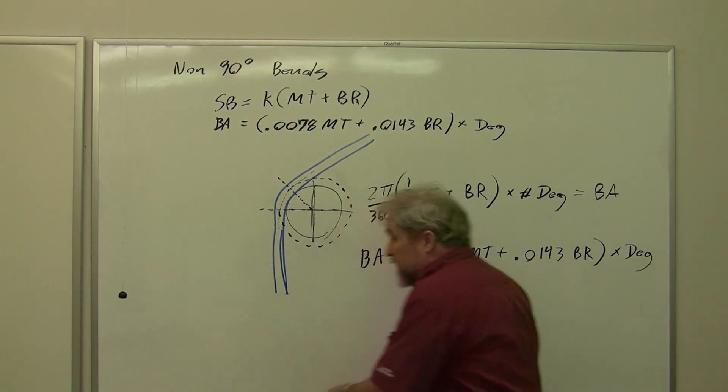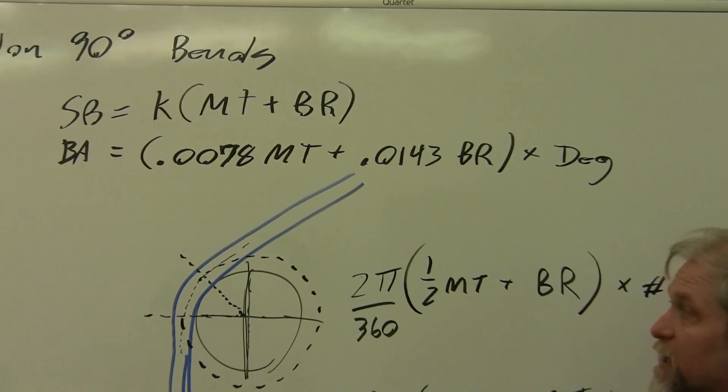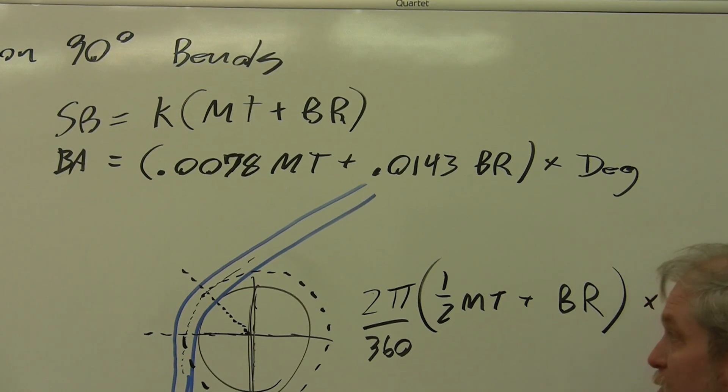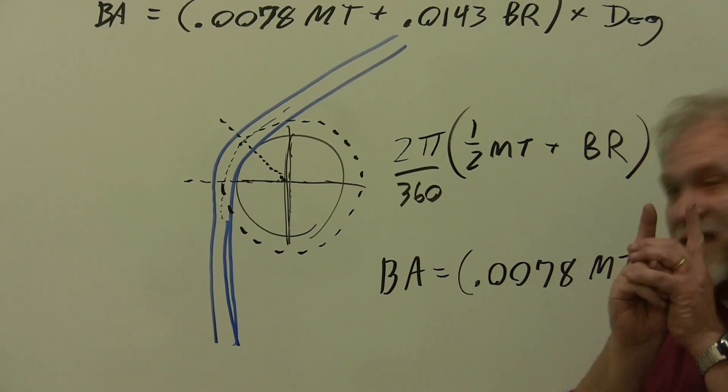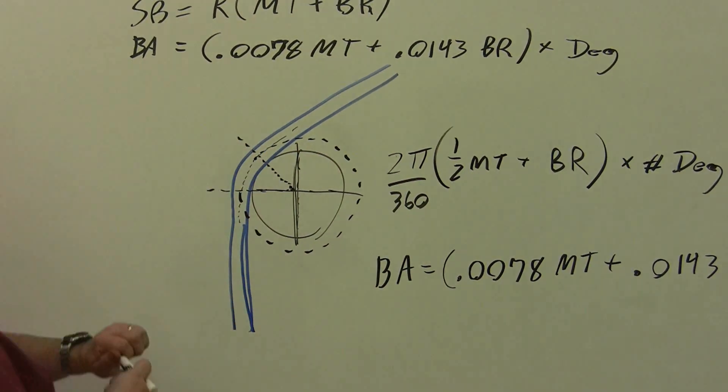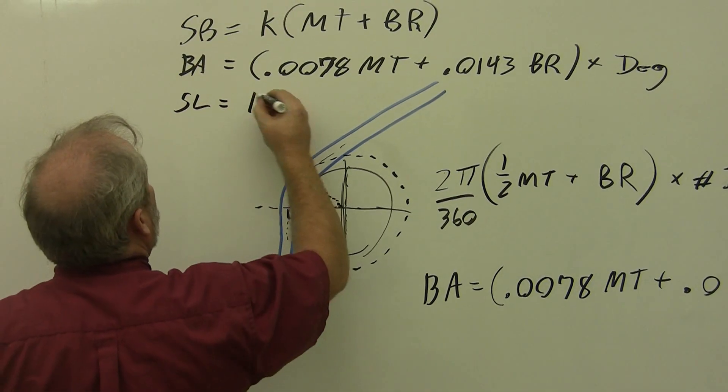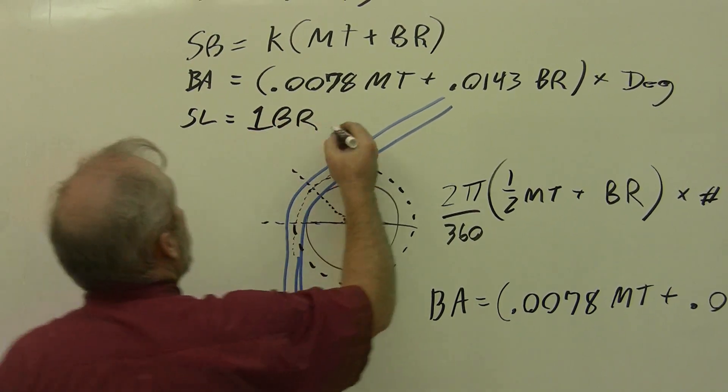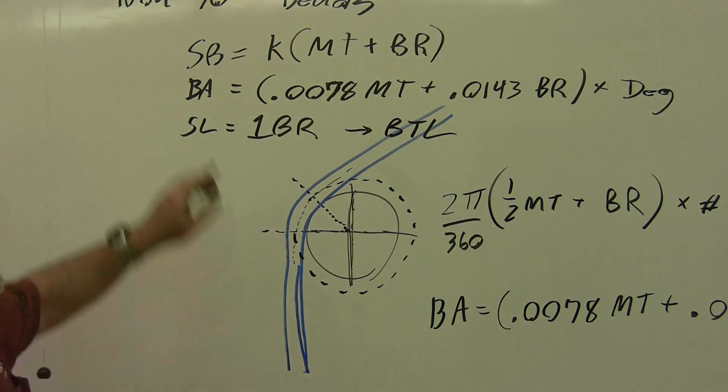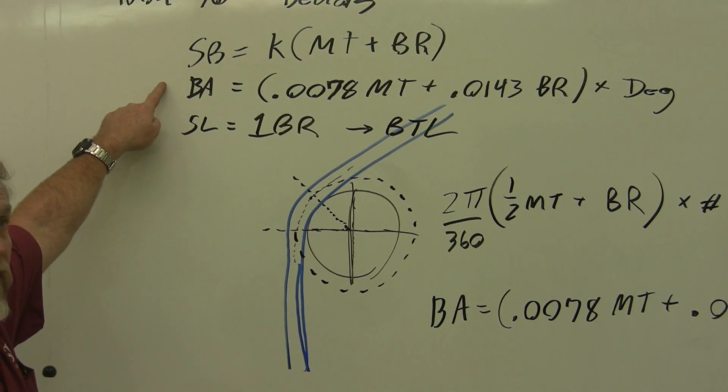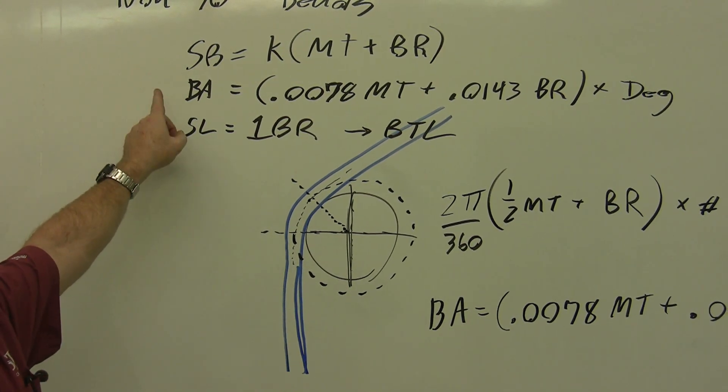There's one more thing we need to know how to calculate before we can begin developing our flats, and that is the sight line. The sight line is how far away we're going to be able to see this thing, and it is still the same whether it's a 90 degree bend or not. Our sight line will still be equal to one times the bend radius away from one of our BTLs. That gives us all the formulas that we need to calculate this for non-90 degree bends. We're going to clip this video and you can watch the other videos to see some examples.